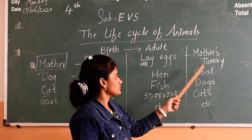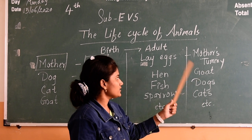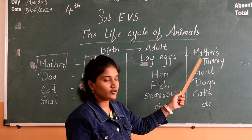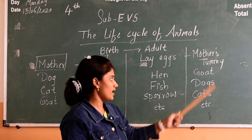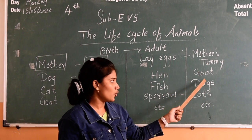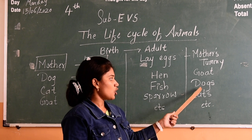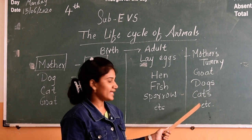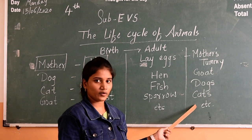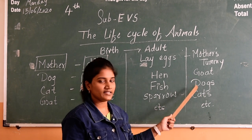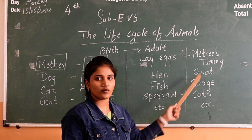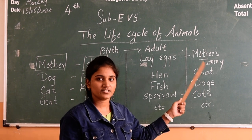Now we will see the animals which are born from their mother's tummy. These are the goat, dogs, and cats. These animals are born directly from their mother's tummy.